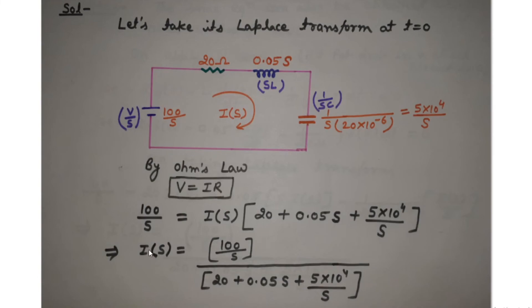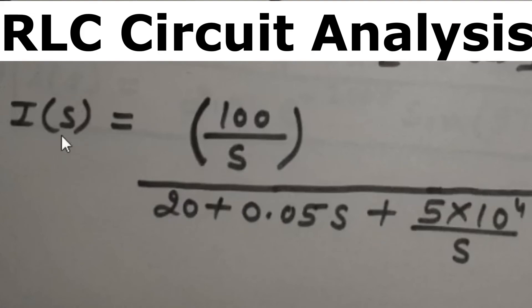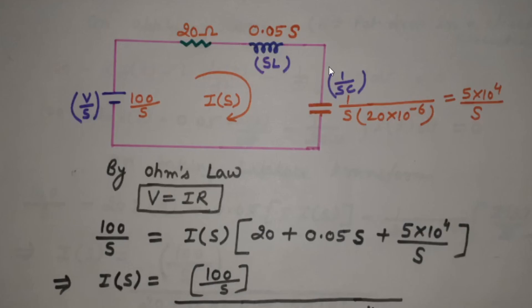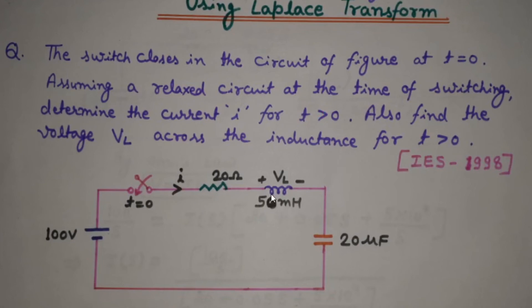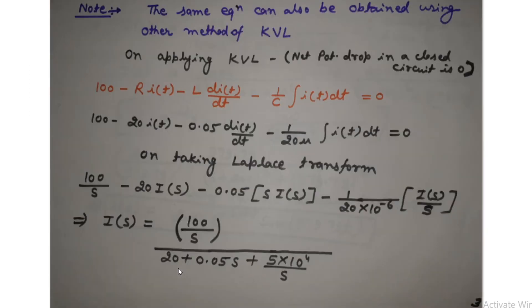This is the expression for I(S). To find the time-domain current I(t), we take the inverse Laplace transform of I(S). Before doing that, I also want to show you how to apply KVL in this circuit, so that even using the KVL method in the time domain you will get this same expression, and you will learn another concept here.